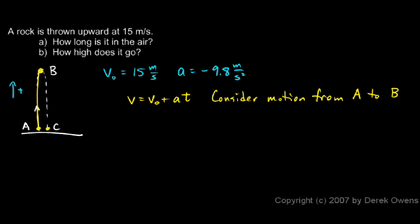So for this first half of the flight, its initial velocity is the velocity at A and the final velocity is the velocity at B. So I could write the equation like this: VB is equal to VA plus at. This, remember, is the initial velocity and this is the final velocity for just that first half of the flight from A to B.